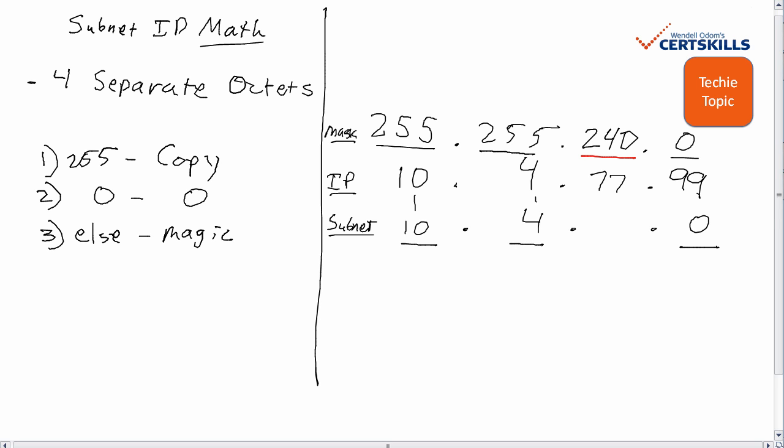The rule when the mask is neither 255 nor 0 is to create something called a magic number. It's not really magic, it's an increment, a multiplier or offset if you will, that can help you find the subnet ID. The magic number is always 256 minus the mask's value in that octet. In this case it's 256 minus 240, or 16.